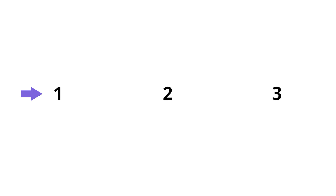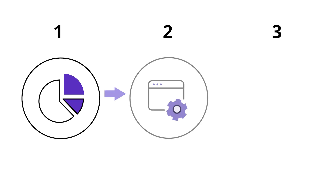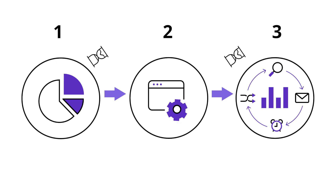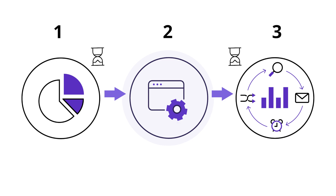Traditionally, data scientists followed a general three-step workflow. One, find, clean up, and stitch together the data. Two, build a model to run on that data. And three, export a report of the model output to inform business decisions. In this traditional workflow, too much of data scientists' highly valuable time is spent on the pre-work of simple data munging and report building, and not as much on the higher-value work of building and iterating on complex models.